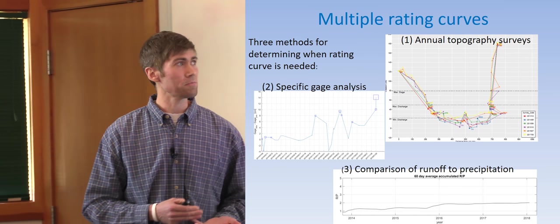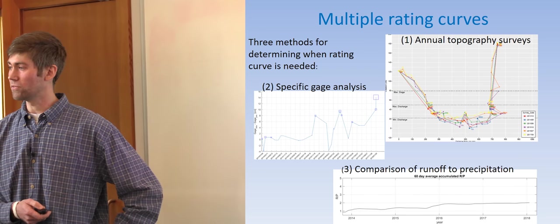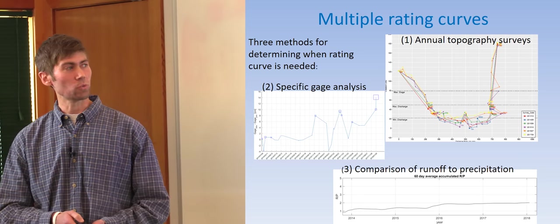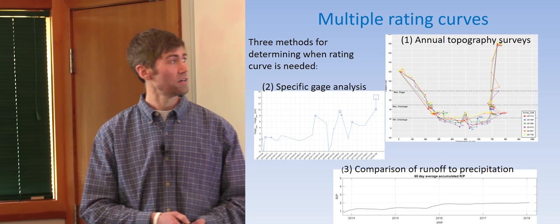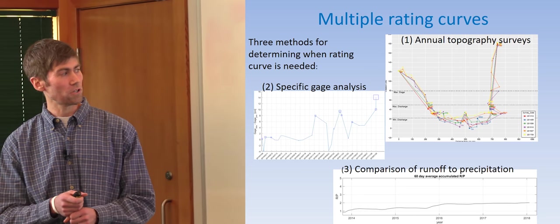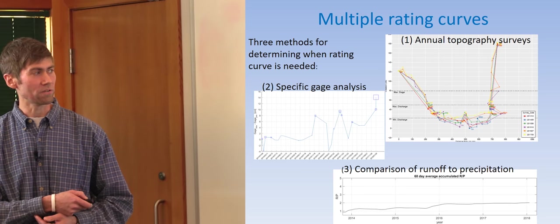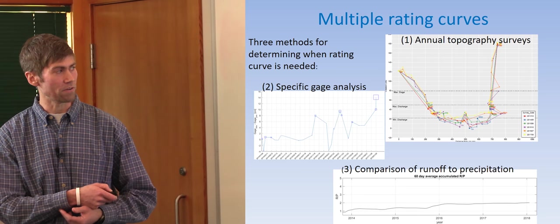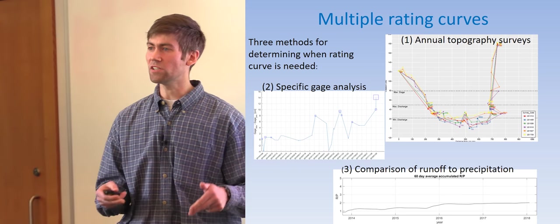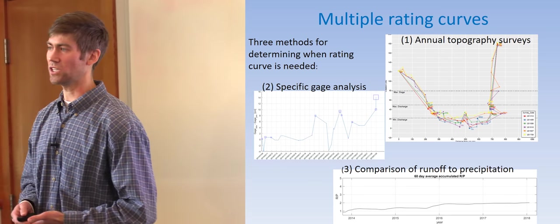And we've come up with three different methods for determining when we need new rating curves. One is simply those surveys, that picture in the second slide. Every year we're going out, we're measuring the same cross section over, so we get, at least on an annual resolution, we have an idea of when the channel geometry is changing. Another method called specific gauge analysis is simply where you compare your observed flow and depth to maybe a first initial rating curve, and if that relation changes, you know that the channel geometry may have changed. So right here, right around 2015 November, there was a change. And a third method is looking at accumulated precipitation into the basin relative to accumulated flow. If that ratio of precipitation to flow changes, that may also indicate that channel geometry has changed.